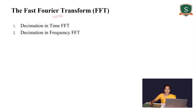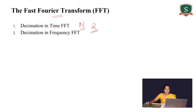To reduce that complexity we use the Fast Fourier Transform. In FFT we divide N samples into N/2 points, then N/2 into N/4 points, and so on until we reach a minimum of 2 points. We then compute the 2-point DFT using the DFT expression and combine them to obtain the full Fourier transform. There are two FFT algorithms: Decimation in Time FFT and Decimation in Frequency FFT.